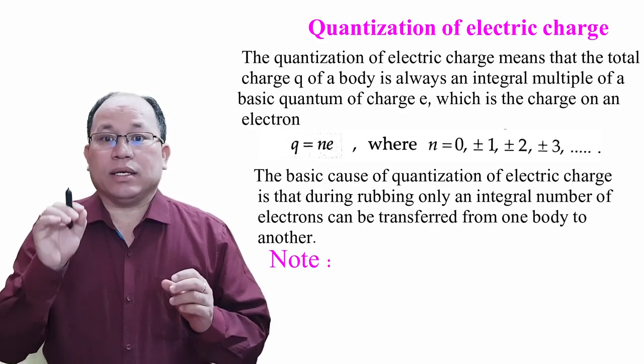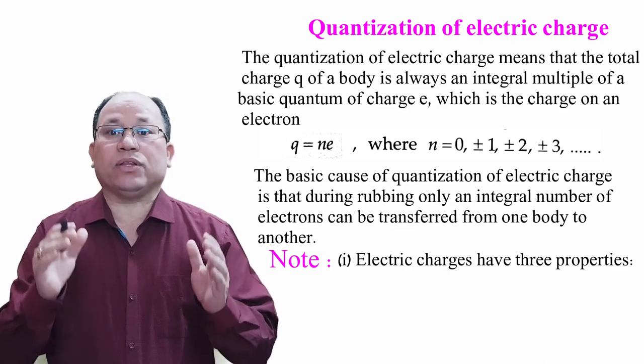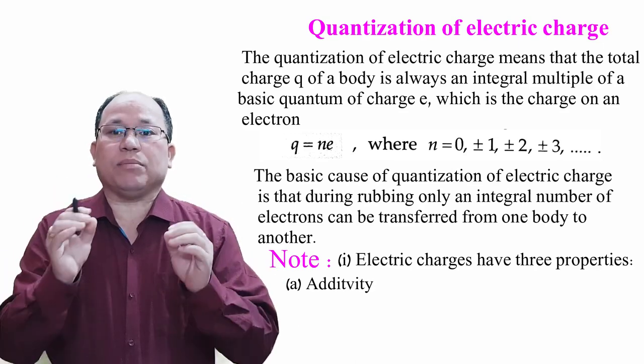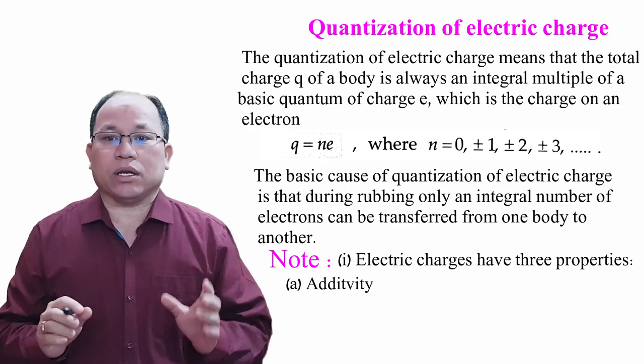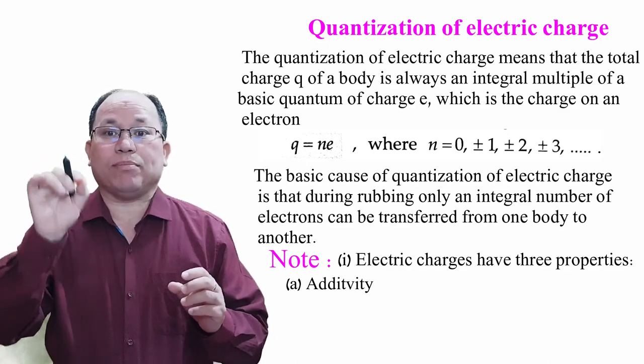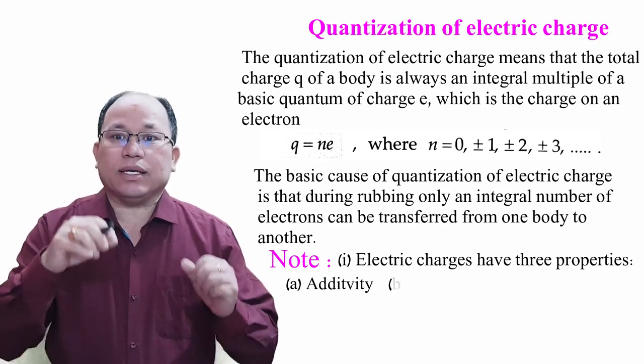Electric charge has three properties. First one is additivity, means in a system if there are charges, total charge q = q1 + q2 + q3, means additive in nature. Next is quantization.